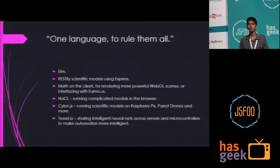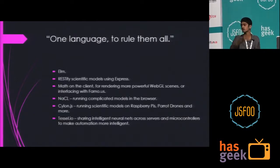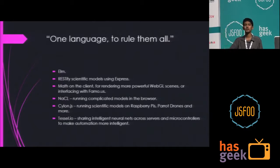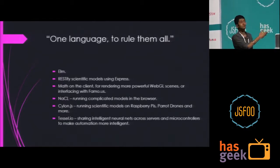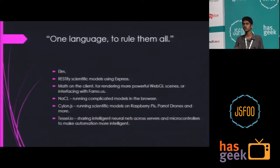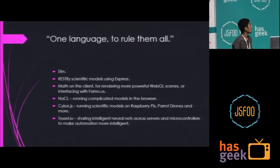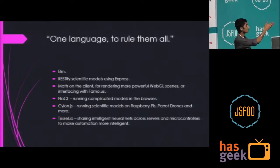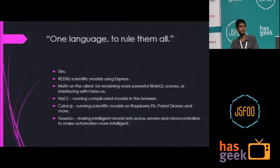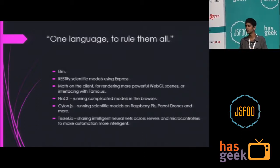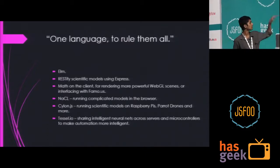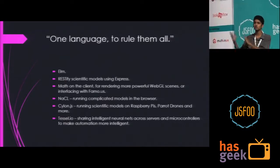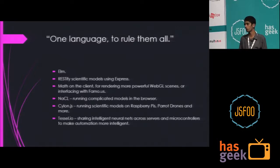And then — one language to rule them all. Try mixing it with Elm, which Shashi talked about yesterday. Try RESTifying scientific models using Express — you can have machine learning models or neural networks running on the cloud and quickly build HTTP routes around them. Math on the client for rendering more powerful WebGL scenes. And Famous — you can plug it in and have a powerful visualization framework. NaCl for running complicated models in the browser, though that's still a few years into the future. Then Cylon and Tessl: Cylon is a JavaScript library that allows you to run JavaScript across many embedded platforms — BeagleBones, Raspberry Pis, Tessls. You could actually share intelligent neural networks across servers and embedded hardware for more intelligent home automation or industrial automation.